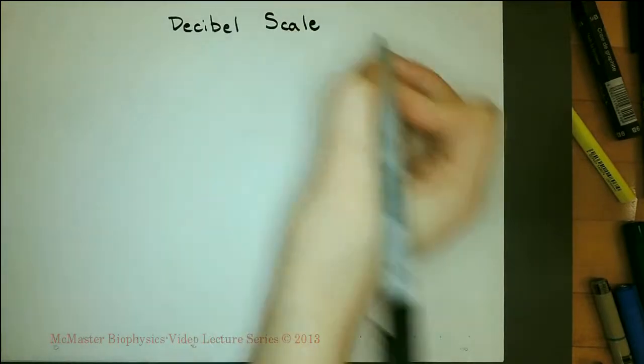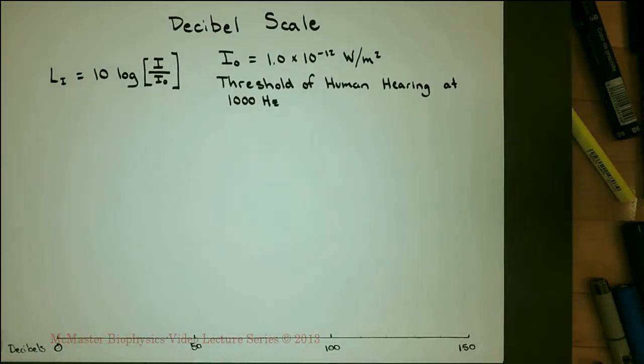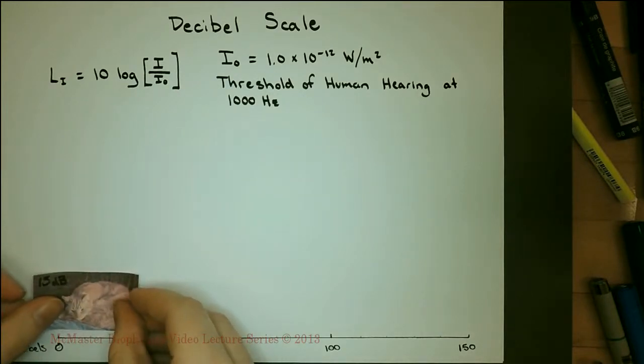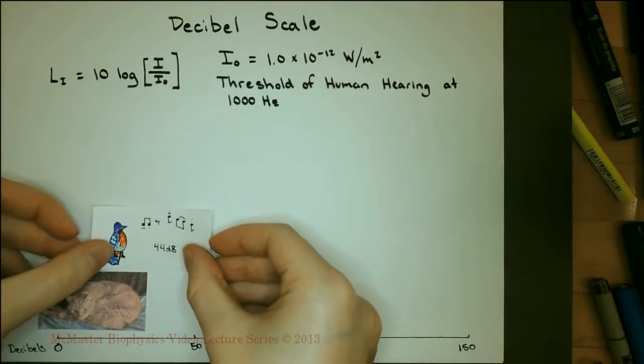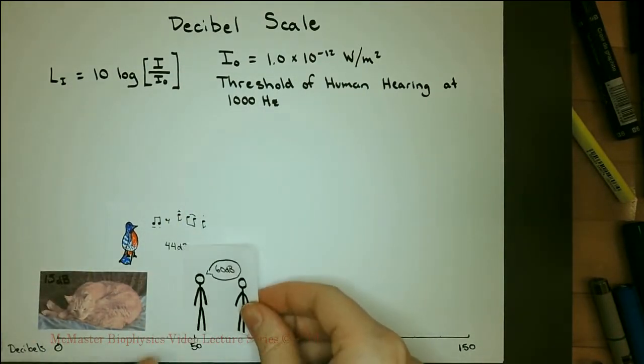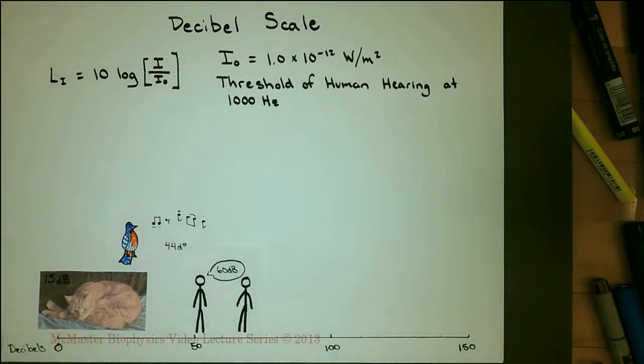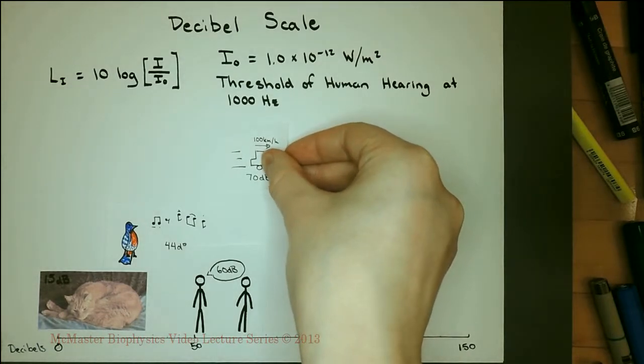The decibel scale compares the intensity of sound to the threshold of human hearing. A cat purring comes in around 15 decibels. Bird song is about 44 decibels. Casual conversation is around 60 decibels. A car at highway speed from 25 meters away is about 70 decibels.